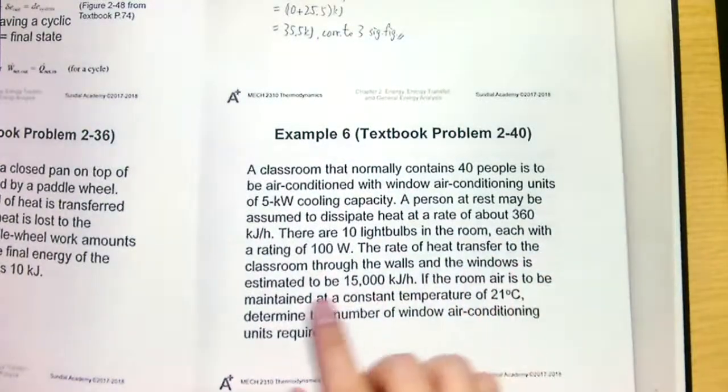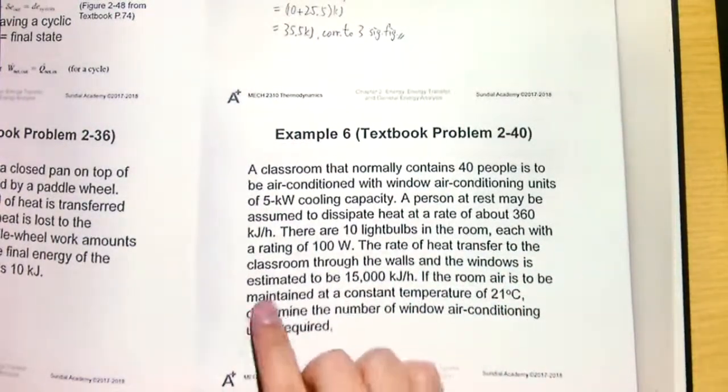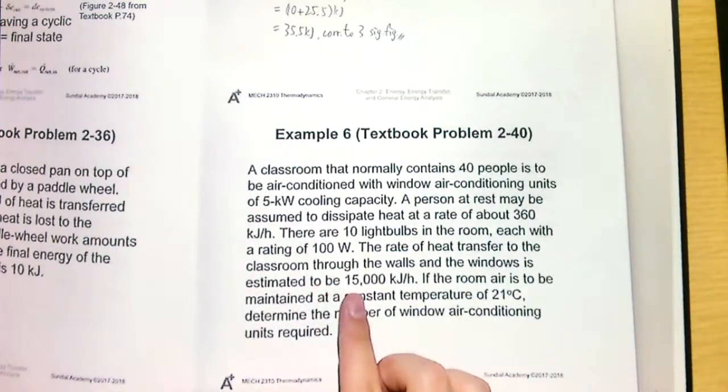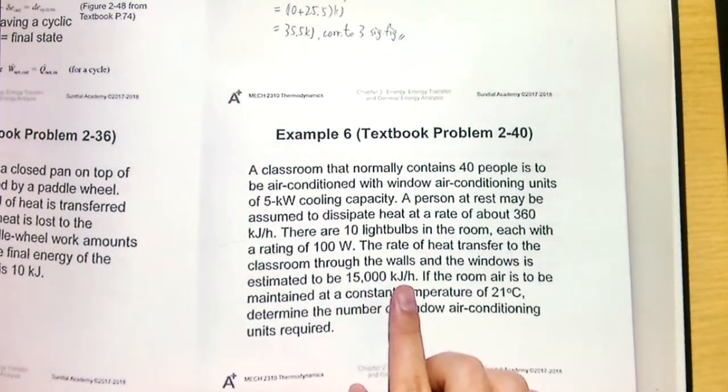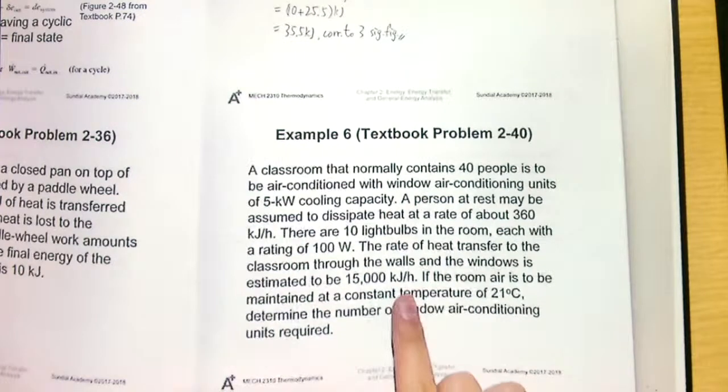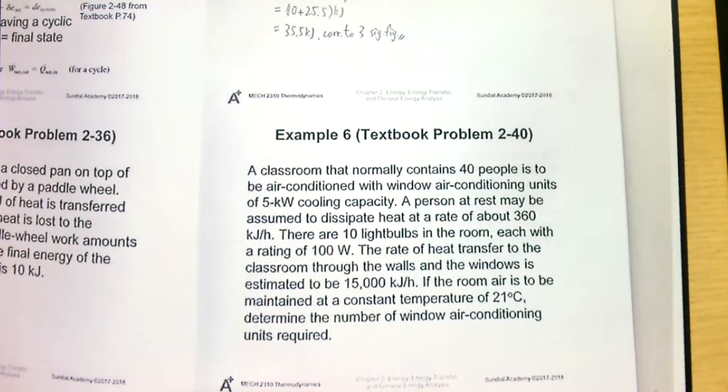There are 10 light bulbs in the room, each with a rating of 100 watts. The rate of heat transfer to the classroom through the walls as well as the windows is estimated to be 15,000 kilojoule per hour. If the room air is to be maintained at a constant temperature of 21 degrees Celsius, we need to determine the number of window air conditioning units required. This is a very typical problem in building services. Try this before you see the solution.